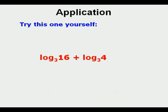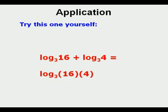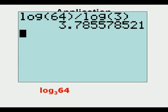Now try this one yourself. This one is log base 3 of 16 plus log base 3 of 4, which becomes log base 3 of 64. Working that out using our calculator, log 64 divided by log 3 gives 3.79.